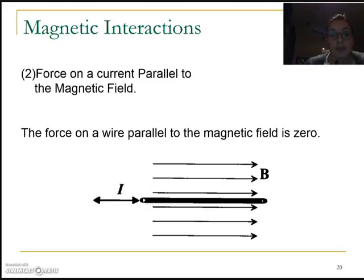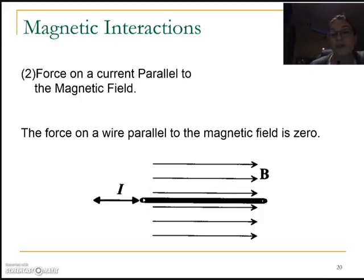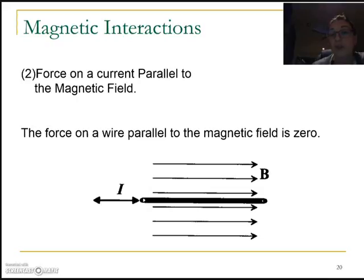One important thing to note is that if we have a wire with a current going through it in a magnetic field, the maximum force is going to be felt if that wire is perpendicular to the field — all of the force of the fields interacting will be felt. If the wire is parallel to the magnetic field, we're going to get a force of zero — no external force will be felt. If it's at some angle in between, then you're going to get some fraction of the force, which we'll talk about in a moment.